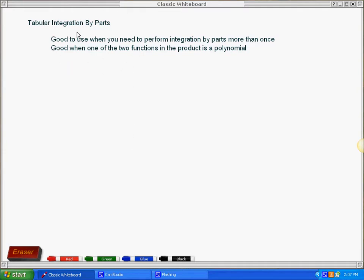I have up here written on the screen that it's good to use when you need to perform integration by parts more than once. But it's also good when one of the two functions in the product is a polynomial or like x raised to a power. This type of method of integration is called tabular integration by parts.